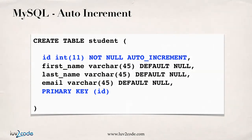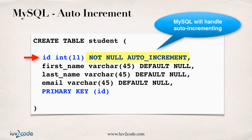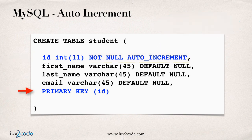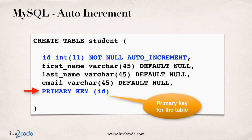How can we use this in MySQL? When we set up our database table in MySQL, we ran a script. This script had an entry for a column ID. We specify that ID is not null, and we also make use of auto-increment, so every time we add a new student it'll automatically increment the student ID. And on the last line, we specify that this ID column is the primary key for the table.